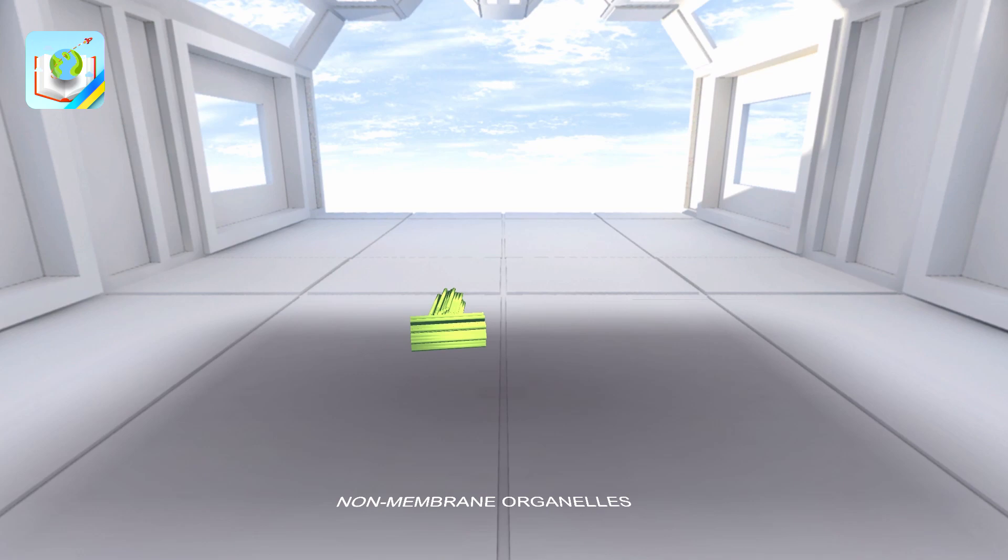The centriole resembles an empty cylinder, with walls built from nine complexes of microtubules, three in each one. There are usually two centrioles in cells, surrounded by a centrosome.